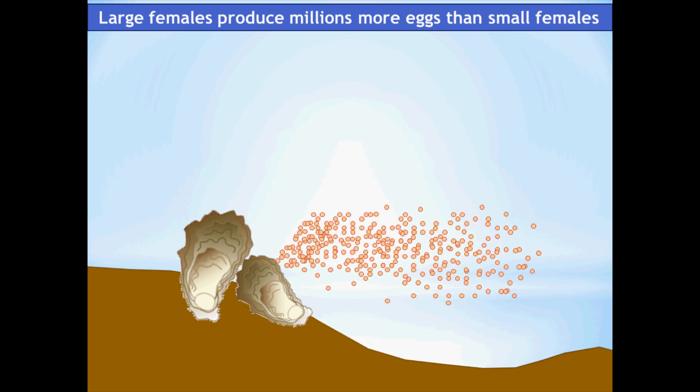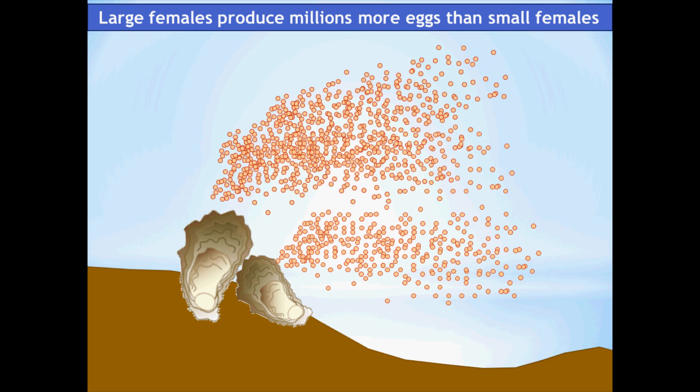We also know that large females produce millions more eggs than small females. A three-inch oyster will produce 30 million eggs, but a four-inch oyster will produce almost twice that — 55 million eggs.